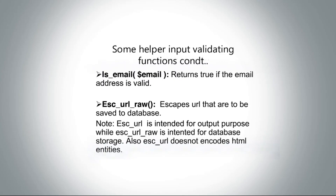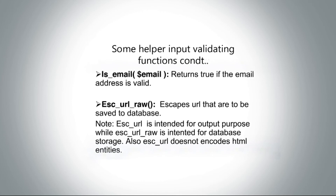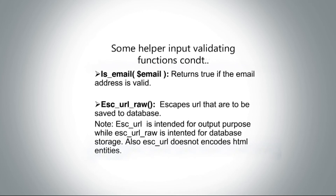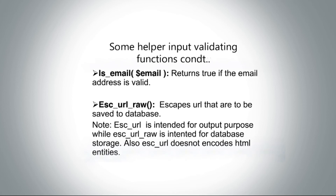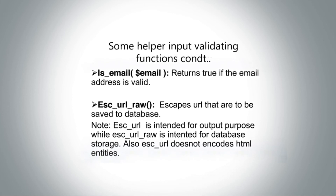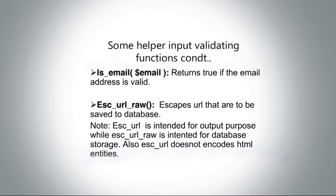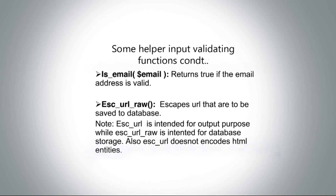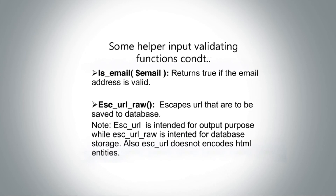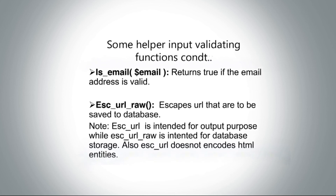There is also `is_email()`, which checks whether an email address is valid and returns true or false. You may also be confused between `esc_url()` and `esc_url_raw()`. `esc_url()` is intended for output — when you take a URL from the database and echo it to the browser. `esc_url_raw()` is used when you take a URL from the user and save it to the database — before saving, you do `esc_url_raw()`. The difference is that `esc_url_raw()` does not encode HTML entities in the database.